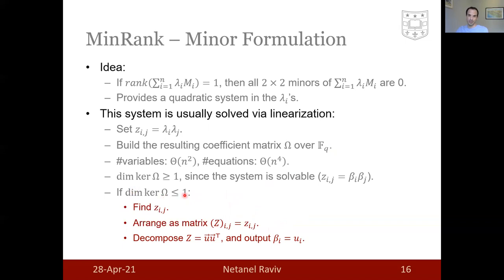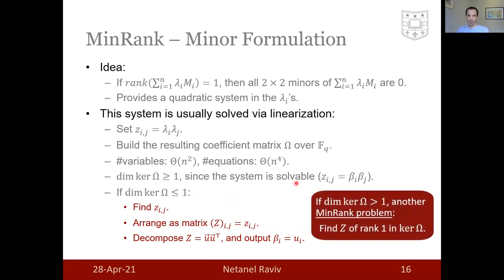However, if the dimension of the kernel here happens to be more than one, we're essentially stuck, because we are left with another min rank problem. Once we've found the kernel of omega, inside that kernel, we need to find the respective z, which is of rank one. This is technically the same problem as we began.